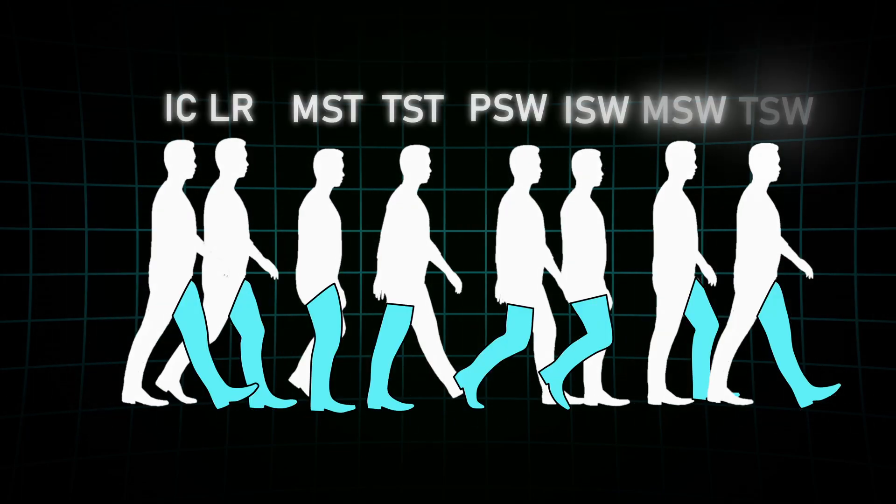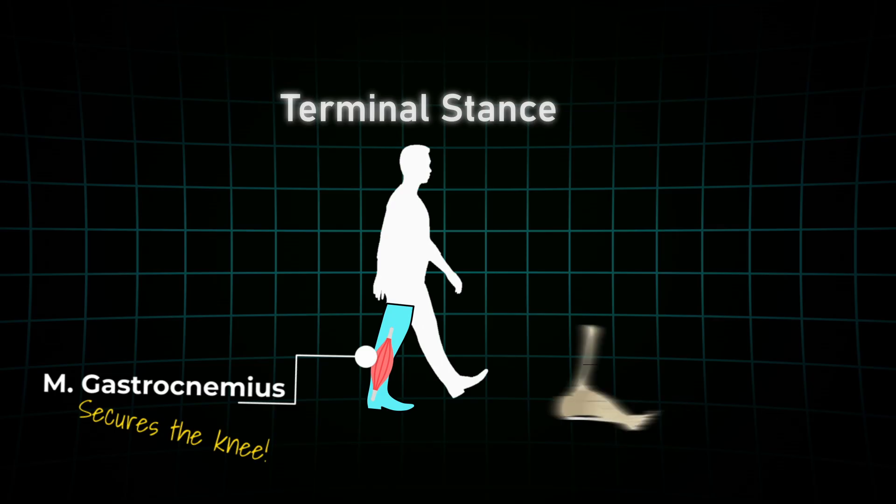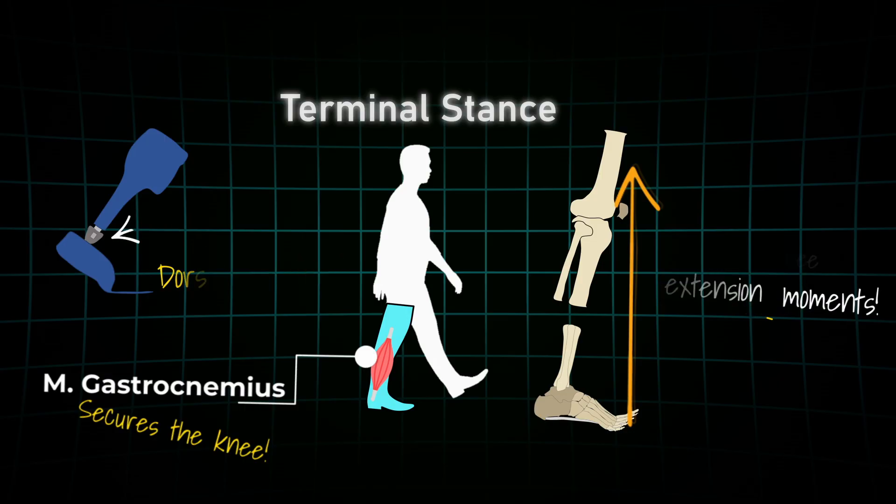The human gait cycle is divided into eight phases. At every single one, there are key tasks the body has to complete, which are much more complex but also much more fascinating than it might seem at first glance.